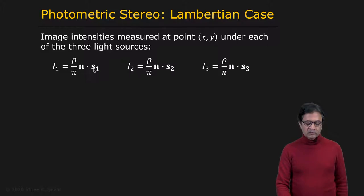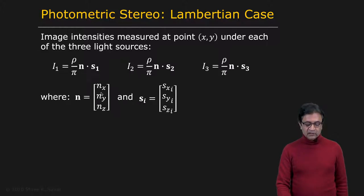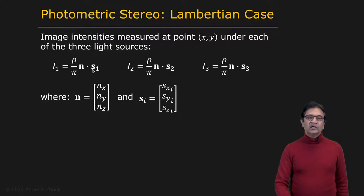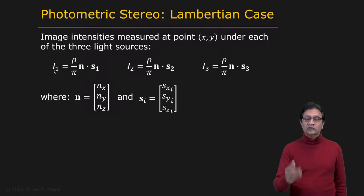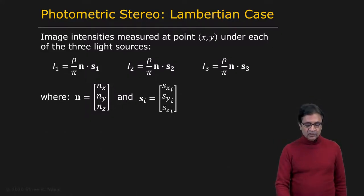These are both unit vectors. We assume the source is a unit vector because we can normalize image intensities with respect to source brightness and distance — those are taken care of. What you're left with is just the albedo of that point divided by pi, times n dot S1. That's the intensity I1.